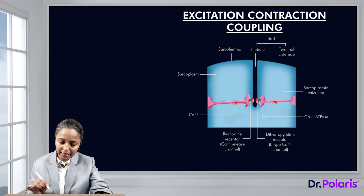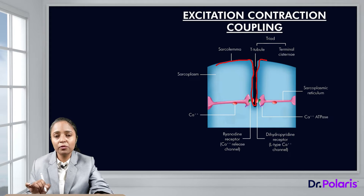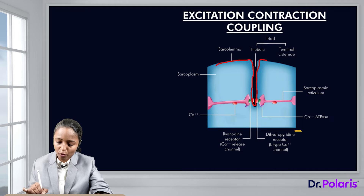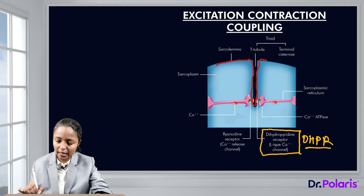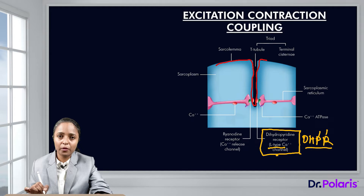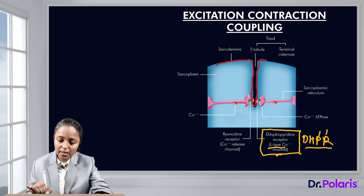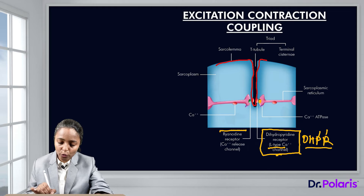As the potential change travels from the sarcolemma deep into the T-tubules, there are certain receptors and channels present. On the T-tubules there is the dihydropyridine receptor (DHPR), which is an L-type, voltage-gated calcium channel. On the sarcoplasmic reticulum, just close to this T-tubule, there is the ryanodine receptor (RYR), which is a calcium release channel.